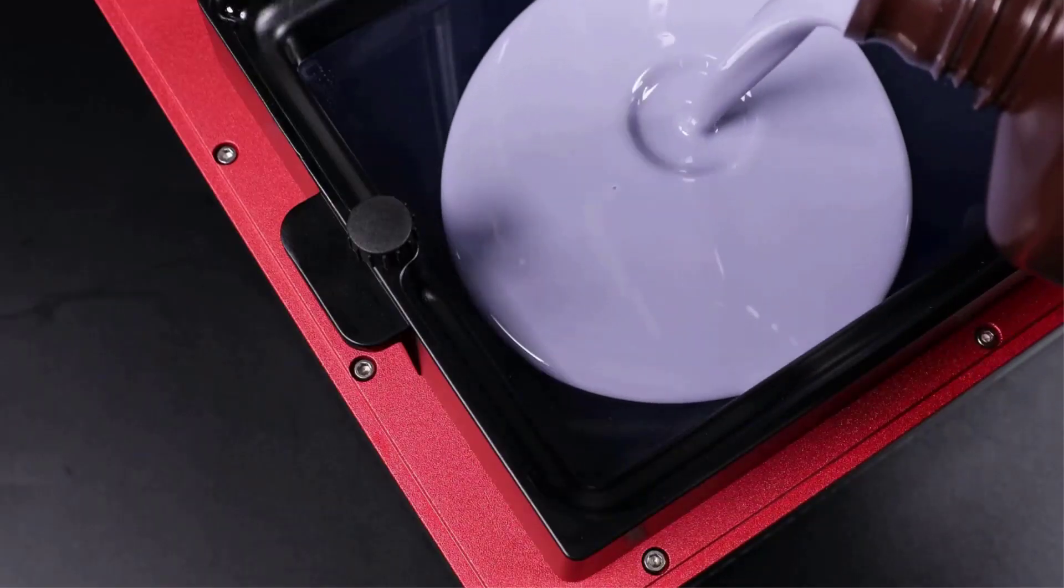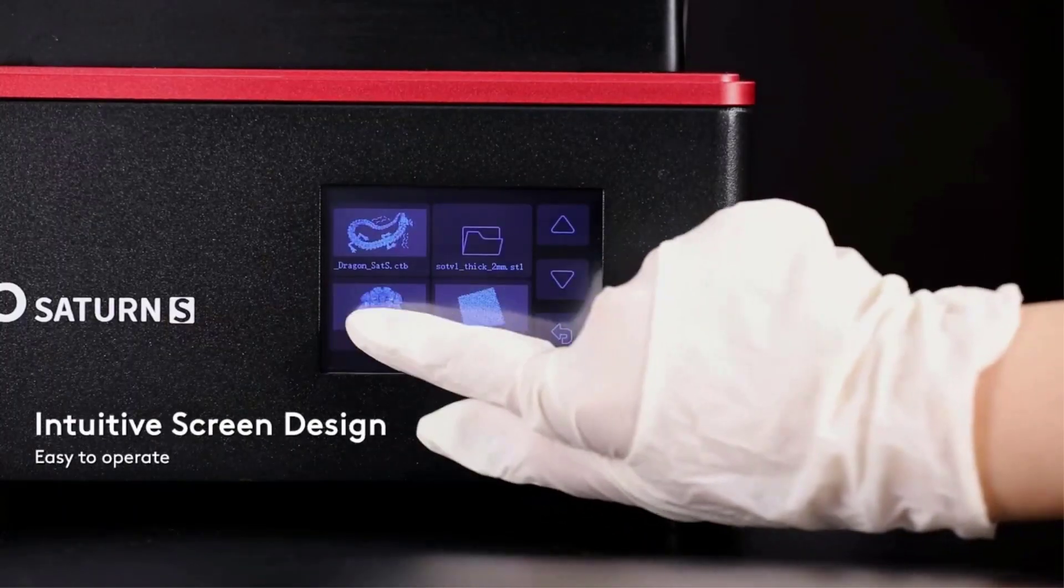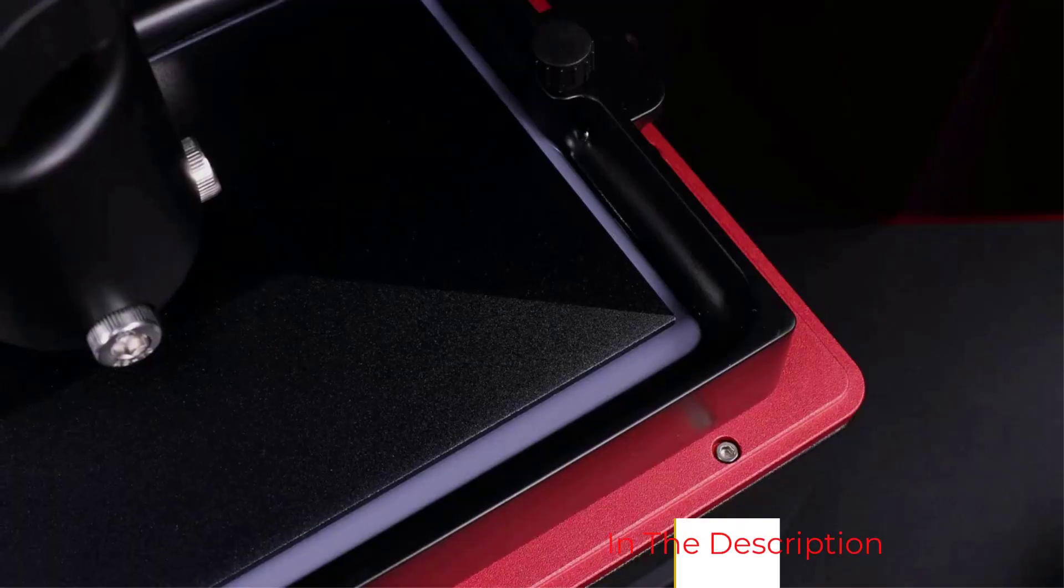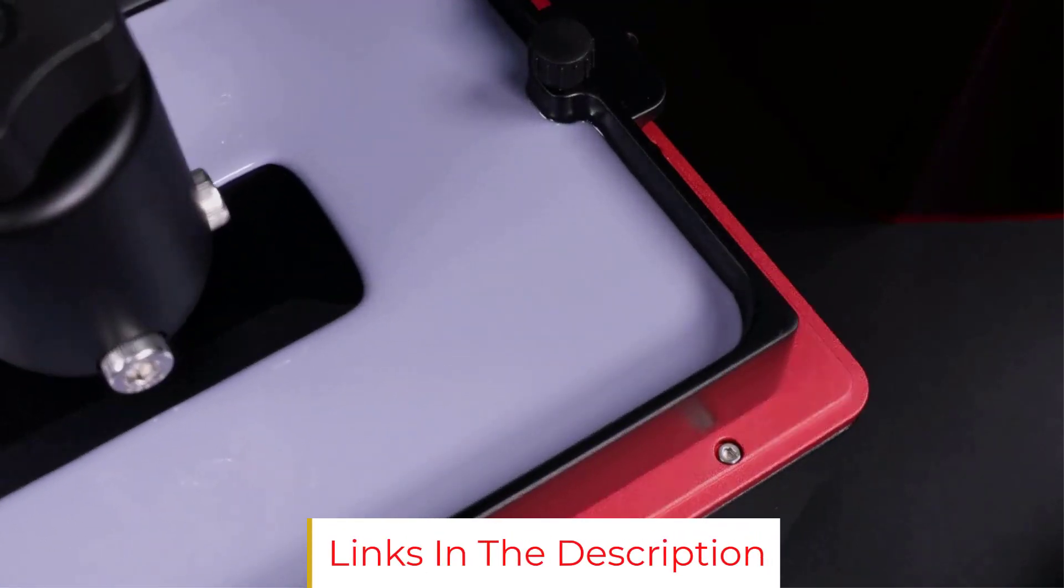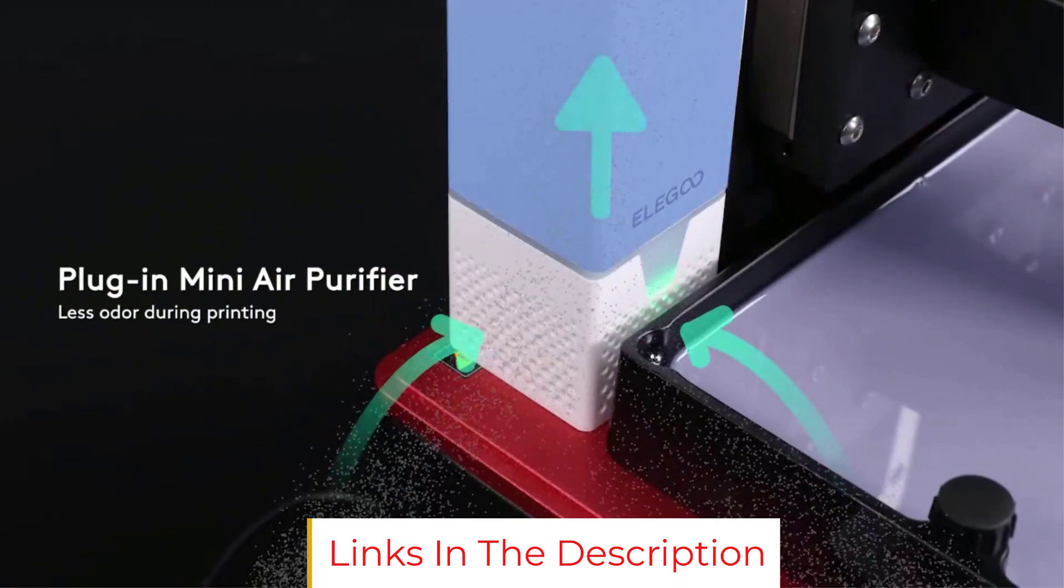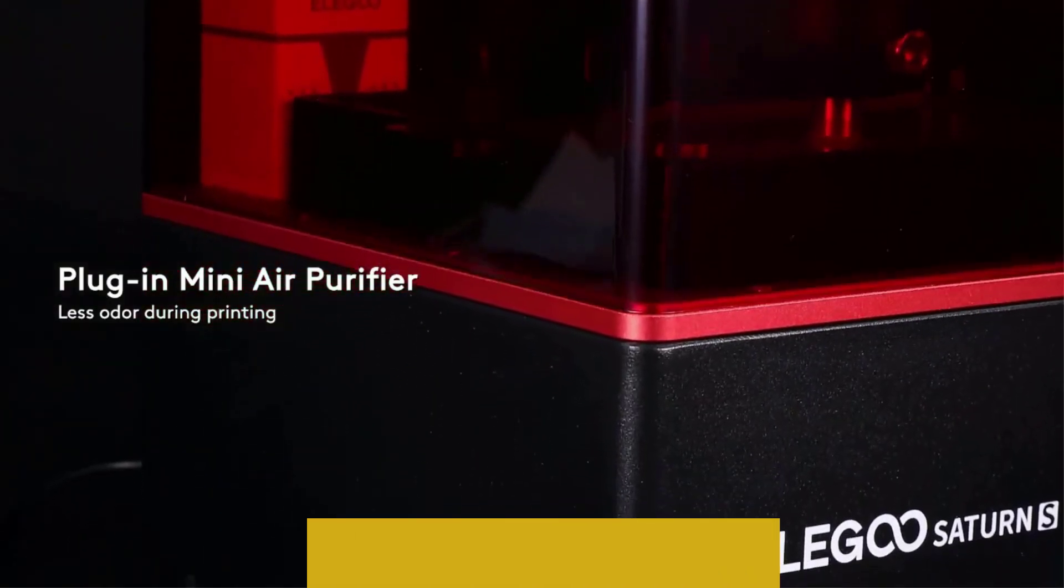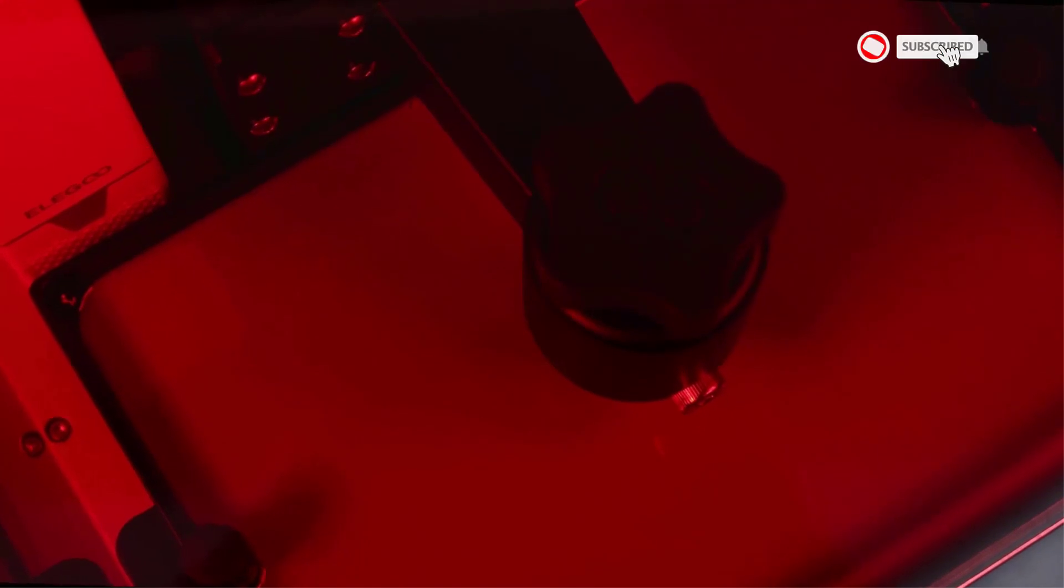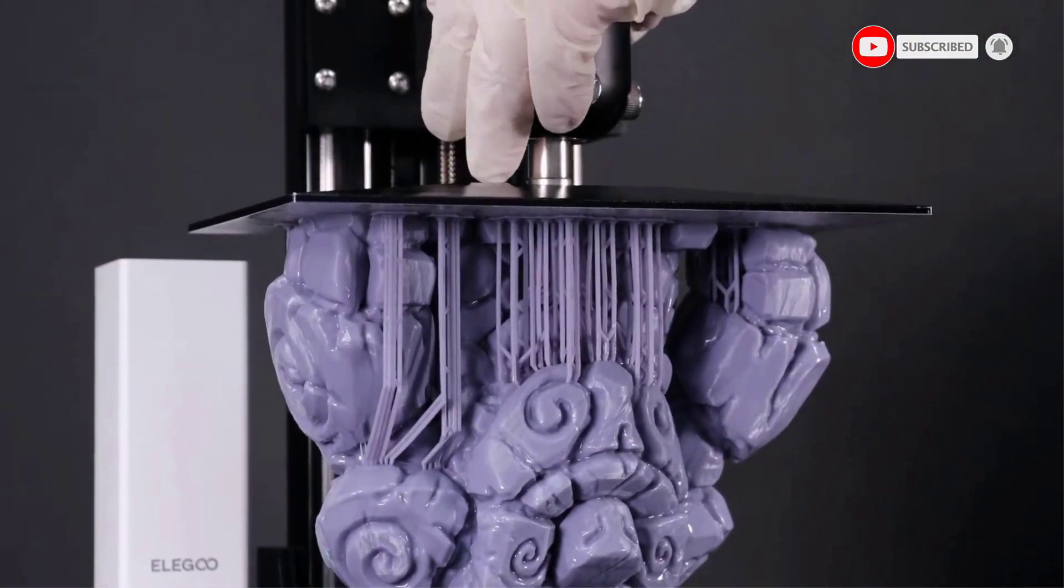Its inbuilt removable air purifier is an excellent addition that filters any 3D printer fumes, making it safe to print within the house and around children. The Elegoo Saturn S is a well-built 3D printer and is a perfect match for hobbyists and professionals looking for a large 4K resin printer with a decent printing speed.